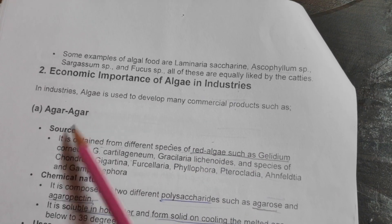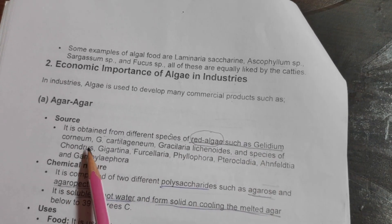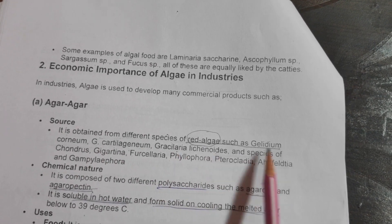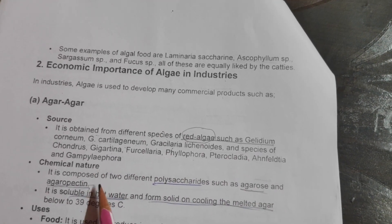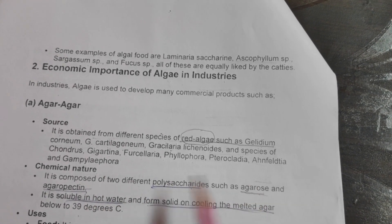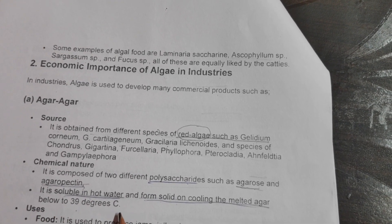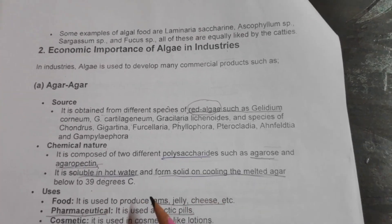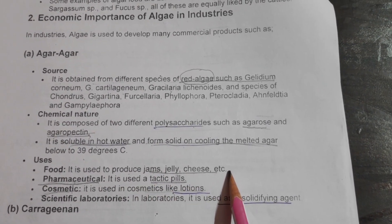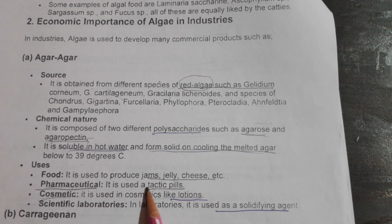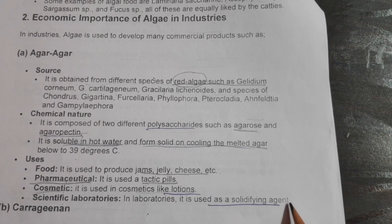Economic importance of algae in industries: Algae is used to develop many commercial products. Agar-agar is obtained from different species of red algae such as Gelidium corneum, G. cartilagineum, Gracilaria lichenoides, Chondrus, Gigartina, Furcellaria, Phyllophora, and many more. Chemically it is composed of two polysaccharides: agarose and agar-pectin. It is soluble in hot water and solidifies on cooling below 39°C. It is used to produce jams, jellies, and cheese as a solidifying agent, in pharmaceuticals, in cosmetics like lotions, and in scientific laboratories.